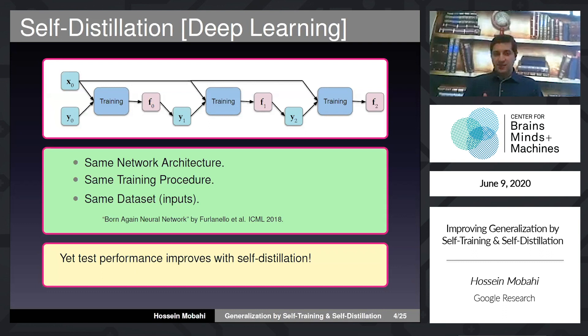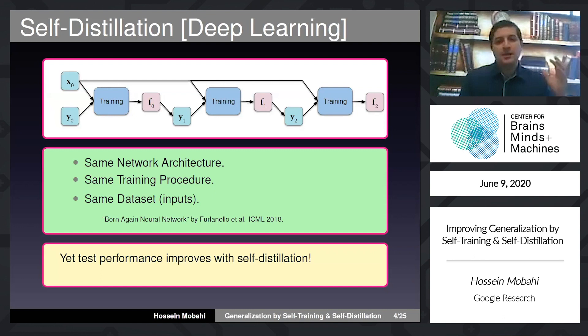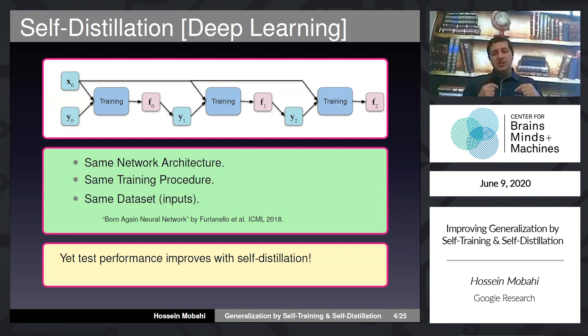Self-distillation is now used in a completely supervised setup. We have some input-output pairs x, y. We train a model and get a classifier f0. What we do is pretend these predictions are new target values — we replace the labels with those predictions while maintaining the inputs the same. This creates a second dataset, we train the model from scratch with this new data, get a second model, and we can repeat this process.